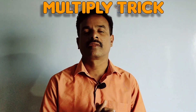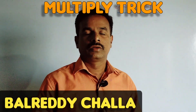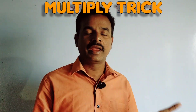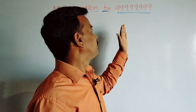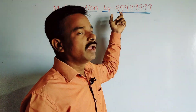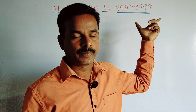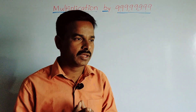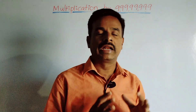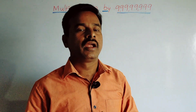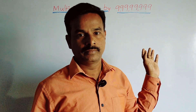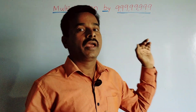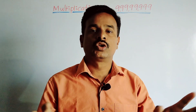Hi friends, hi everyone! Today I'm going to explain how to multiply any number by some nines. For example, eight nines — multiply any number by eight nines. Using our current multiplication method it takes ten minutes minimum and also ten steps, but I can do this multiplication in one step and also two seconds.